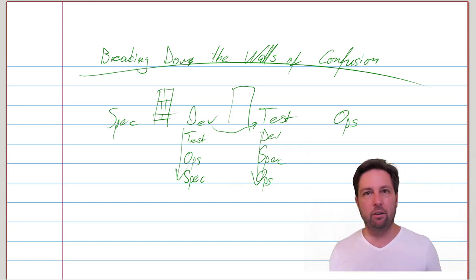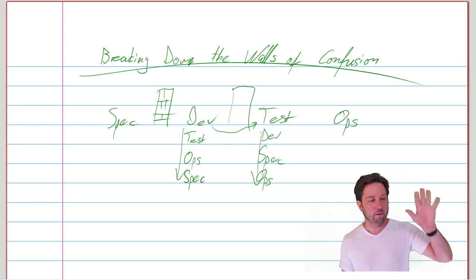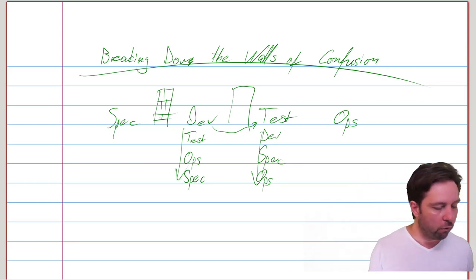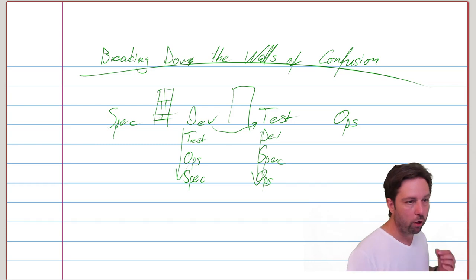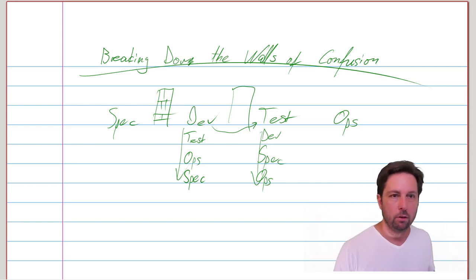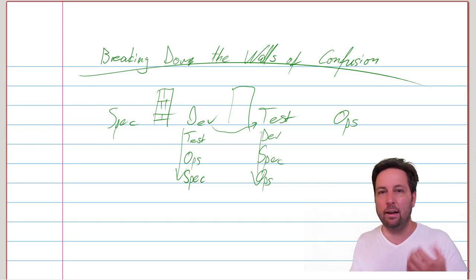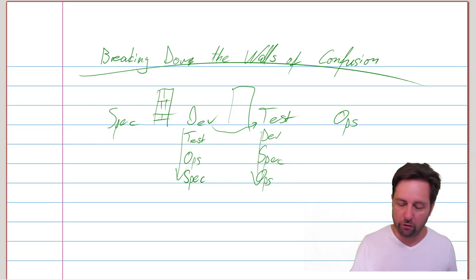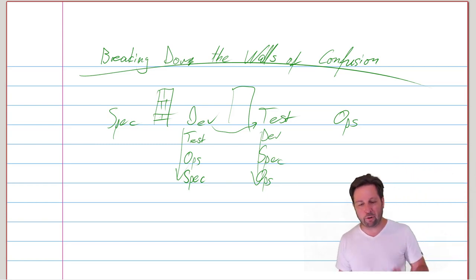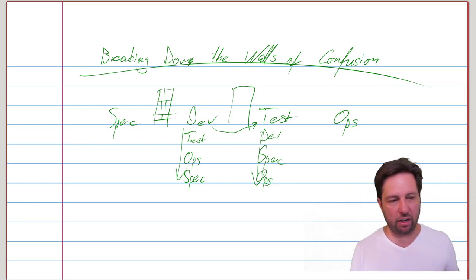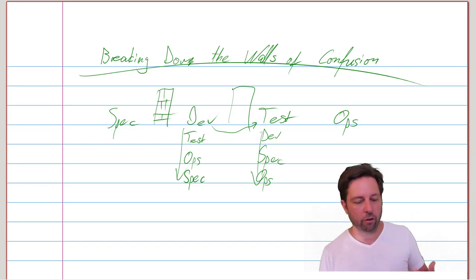Good old idea of cross-functional teams, but how do you get there? I think it's really important for people who work on specifications, for example, to have a clear understanding of the needs and thought processes and focus of testers, for instance, or for operations people to really have a clear understanding of the concerns of developers.